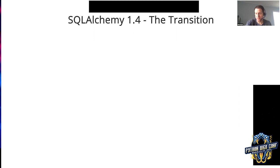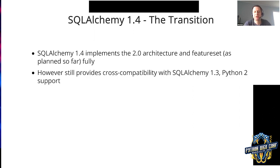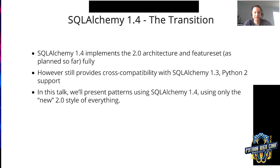SQLAlchemy 1.4: the transition. 1.4 implements the 2.0 architecture and feature set as planned so far completely, and it provides cross-compatibility with SQLAlchemy 1.3 and still works in Python 2. In this talk, we're going to pretend that 1.3 and everything before never existed — we're going to present SQLAlchemy completely from the 2.0 style. So everything that we work with here is the new way of working, and that will look different for people who've used SQLAlchemy.